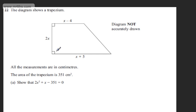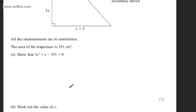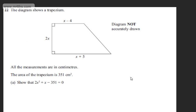This is question number 22. The diagram shows a trapezium. All measurements are in centimeters. The area of the trapezium is 351 cm². In part A, we need to show that 2x² + x - 351 = 0.